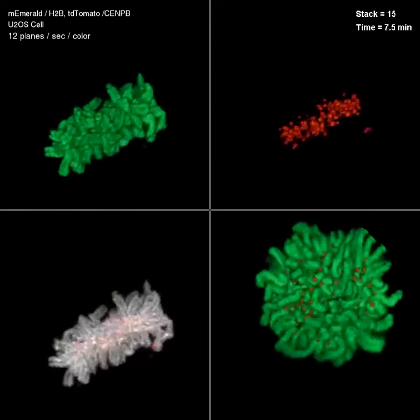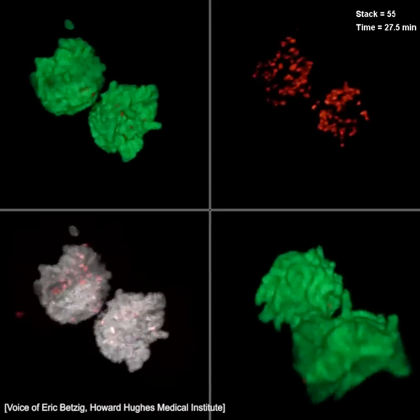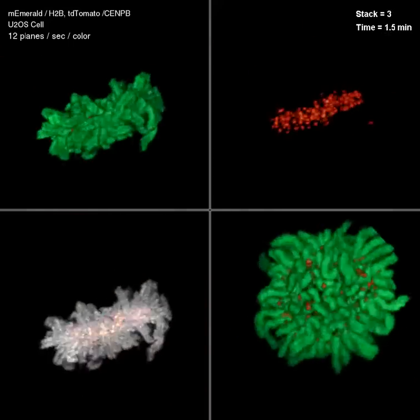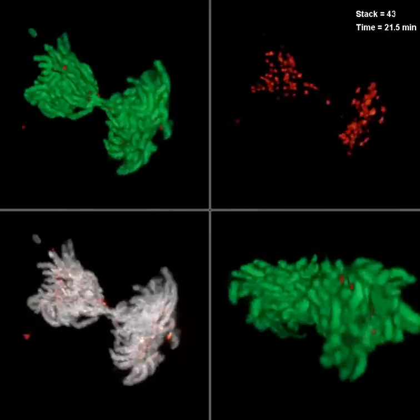What you're seeing is a human osteosarcoma cell which is exhibiting massive polyploidy. So there's more chromosomes than normal in a human cell.